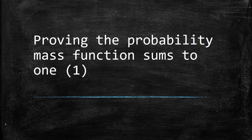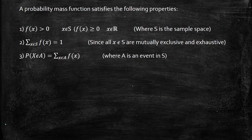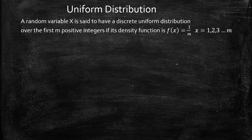Welcome back to another video. In this video I'll be proving that the probability mass function sums to one for various discrete distributions. A probability mass function satisfies three properties, but we'll be looking at property 2: the sum of f(x) is equal to 1.